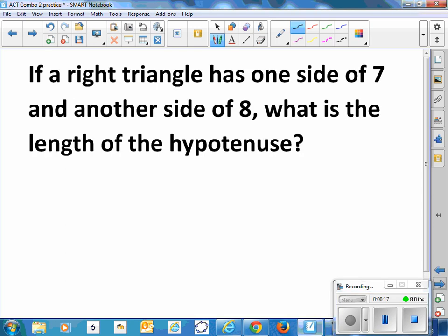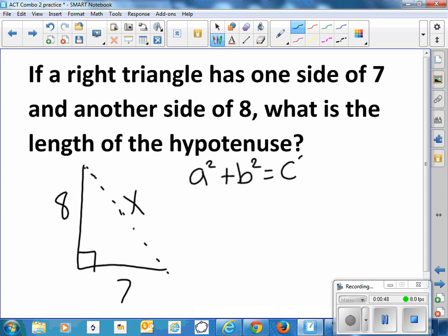If a right triangle has one side of 7 and another side of 8, what is the length of the hypotenuse? That angle there is 90 degrees. The hypotenuse is the one we're trying to find. Maybe this one's 7, this one's 8. So what's that one? We don't know. Well, you might remember that for a right triangle, the length of one side squared plus the length of another side squared equals the length of the hypotenuse squared.